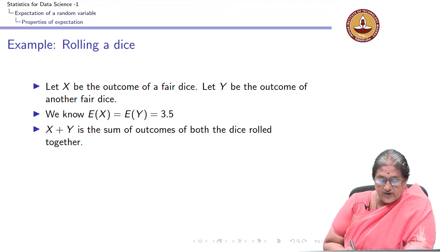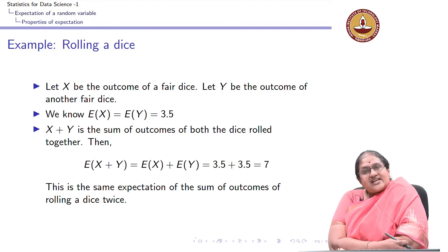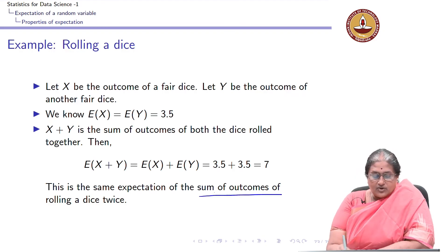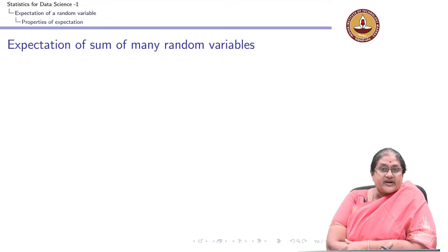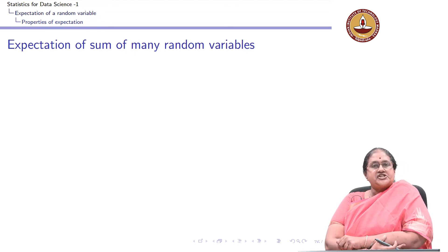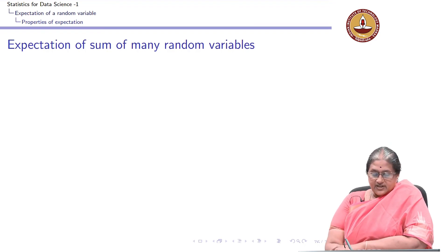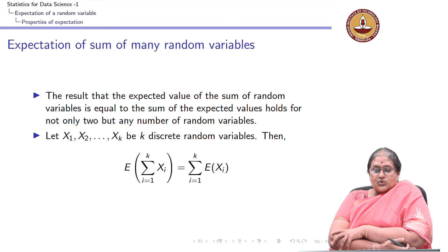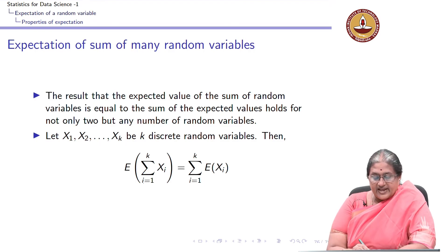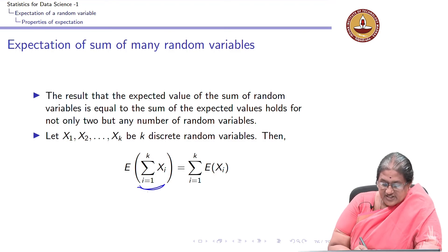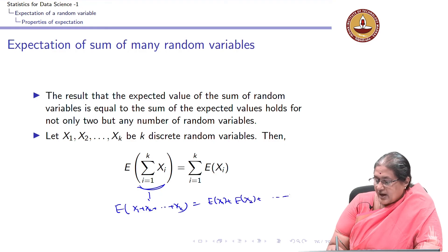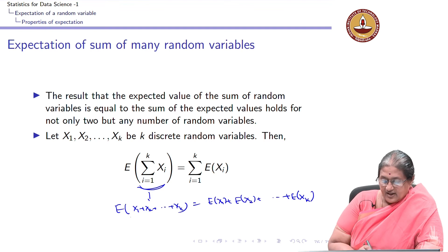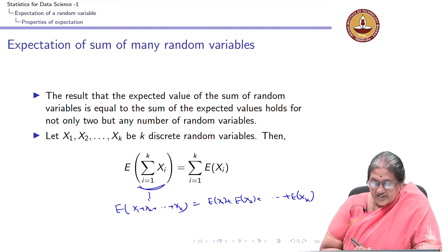We can extend this property: expectation of sum is sum of expectations, for more than 2 variables. If x1, x2, ..., xk are discrete random variables, then expectation of (x1+x2+...+xk) = expectation(x1) + expectation(x2) + ... + expectation(xk). When k=2, it reduces to what we discussed earlier.